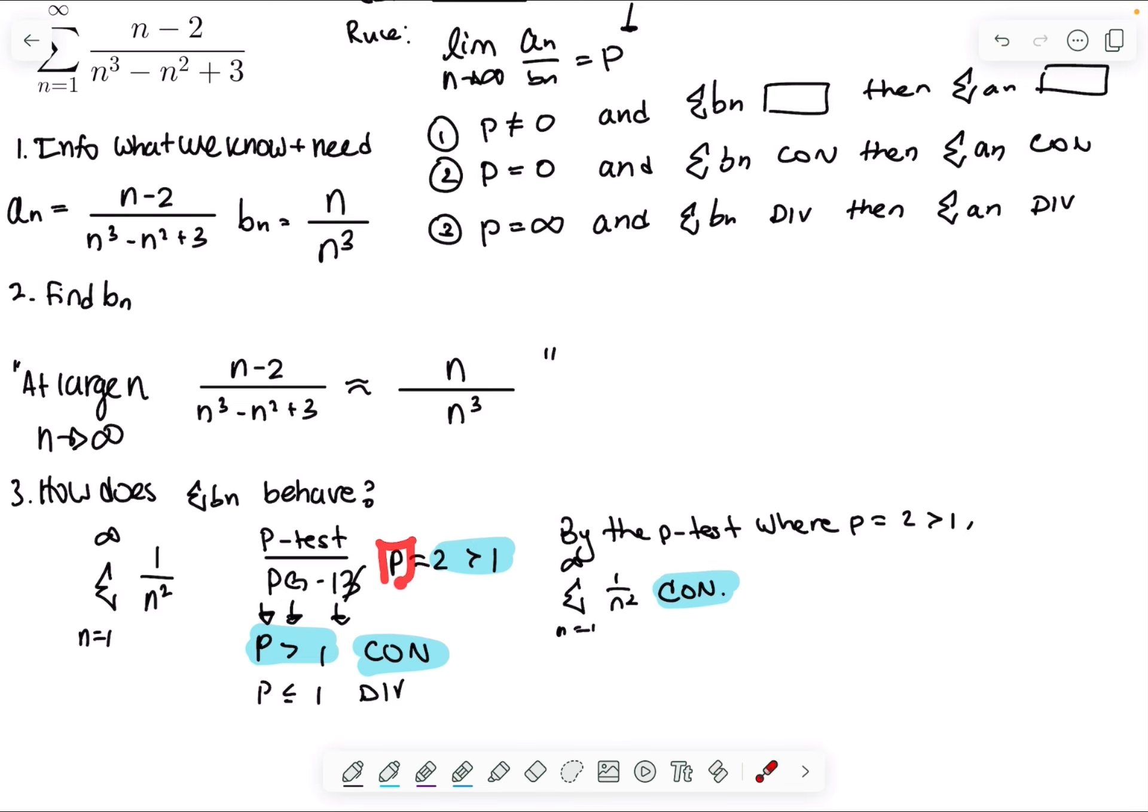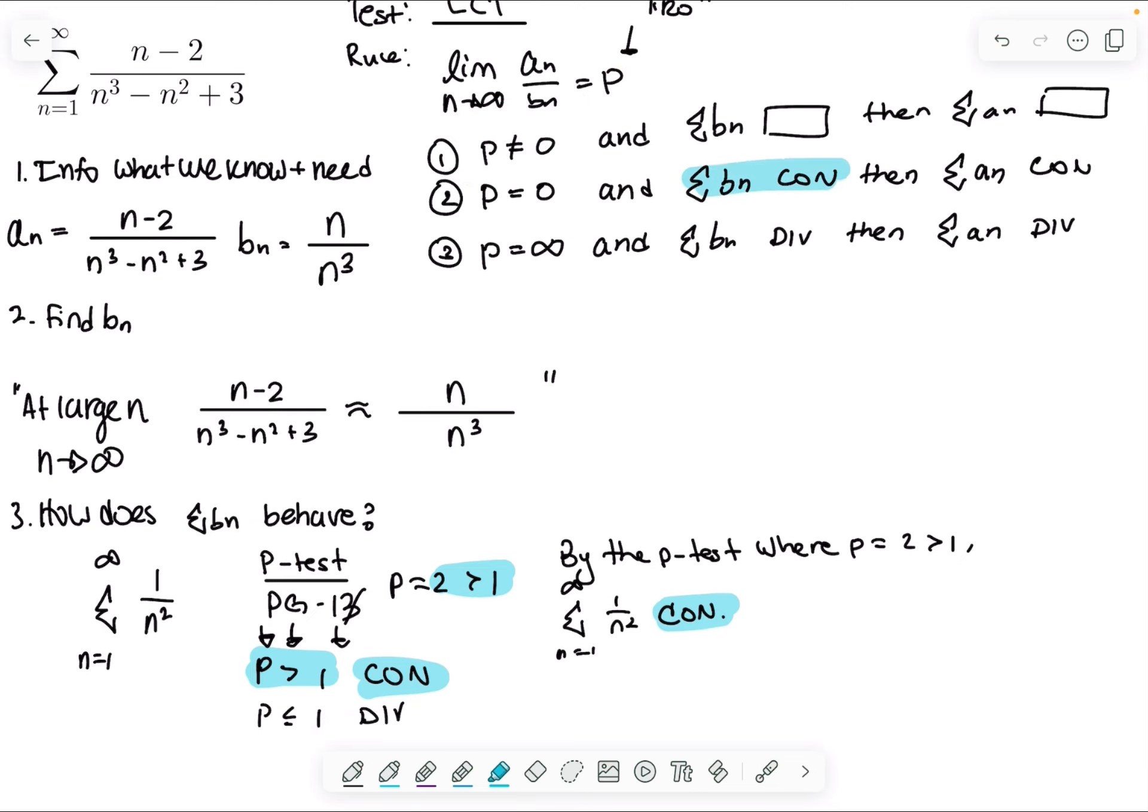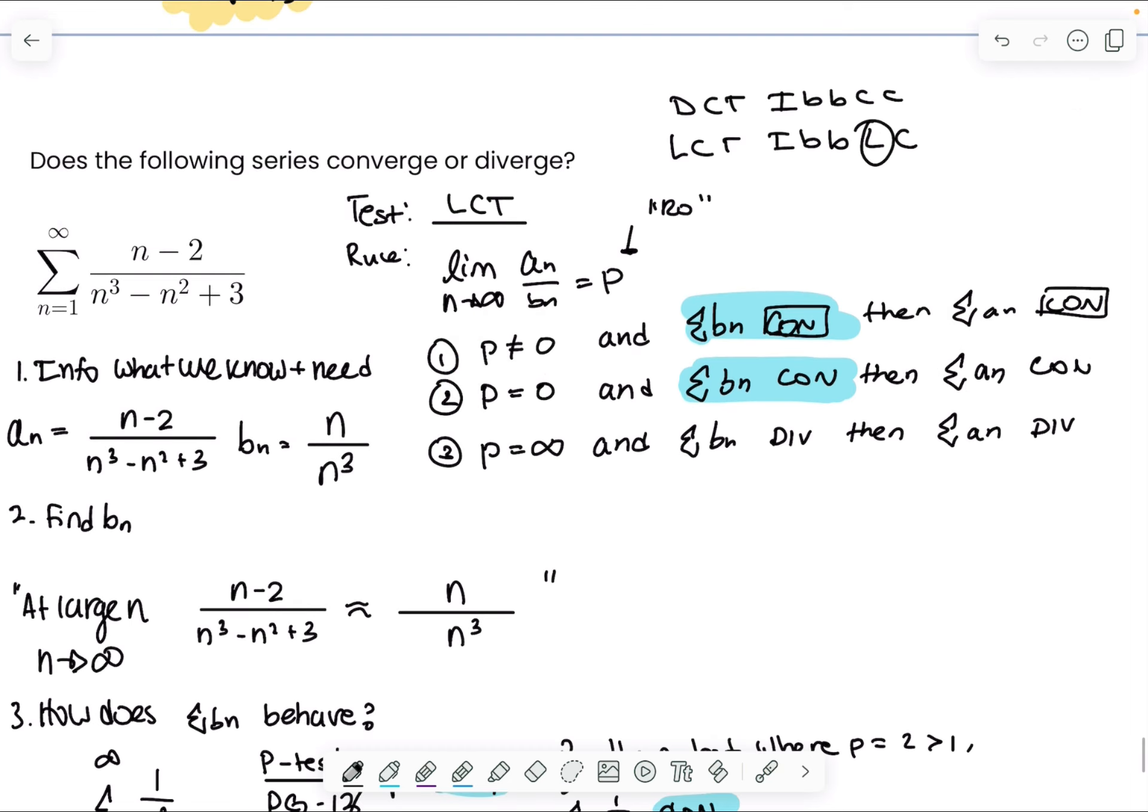That's our little sentence right here. Remember this p is not the same as this p. This is rho, this is the limit. This is p for the p-test. So now we know that this series b_n converges. So we know that this converges. These two will always be the same, so this will also converge. So our conclusion can either be this or this, and that depends on what our rho is. So that is our next step, the limit.